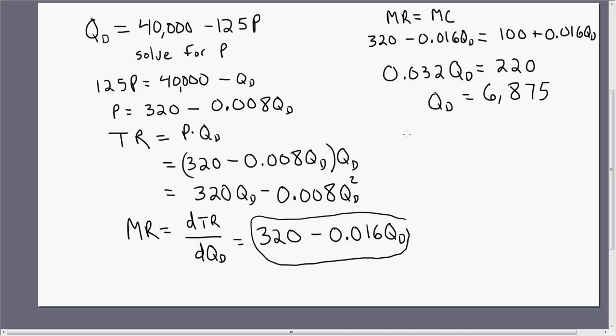What price will the dominant firm charge? Rewriting our inverse demand and just plugging this 6,875 into the dominant firm's inverse demand equation. If you were to simplify that, you're going to get $265. So let me just highlight that.